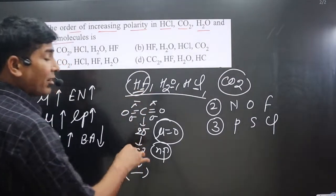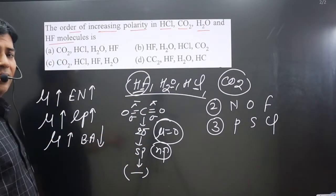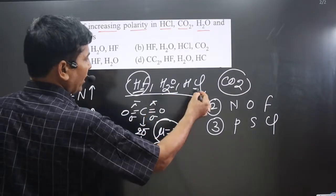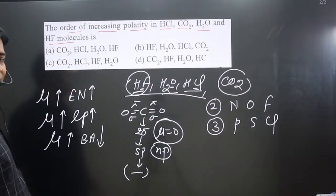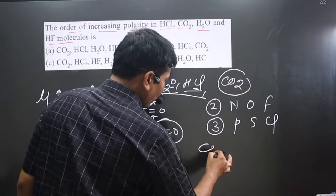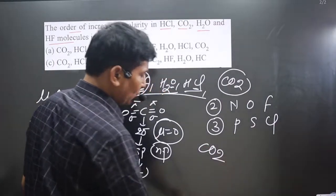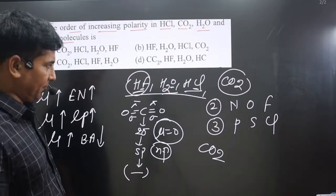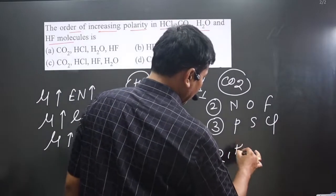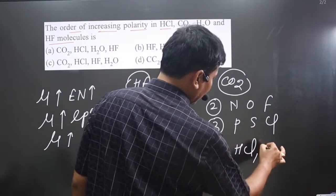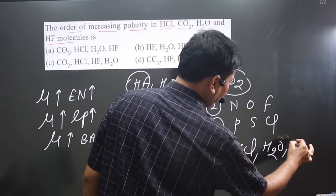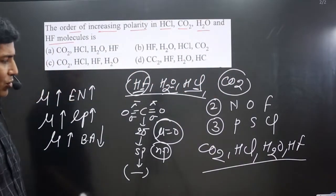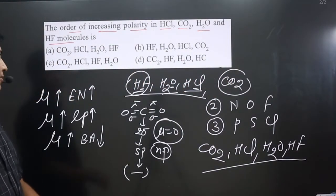So the order of increasing polarity is: CO2 (non-polar, least polarity), then HCl, then H2O, and finally HF as the most polar. The increasing polarity order is CO2 < HCl < H2O < HF.